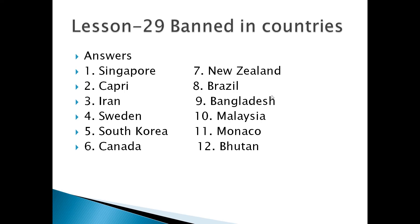Number 11: in this country the government does not allow citizens to go to casinos — houses where gambling activities take place. Casinos are for foreigners only. Monaco. Next: this is the only country in Asia where cultivation, harvesting, production and sale of harmful tobacco products are banned. Bhutan.